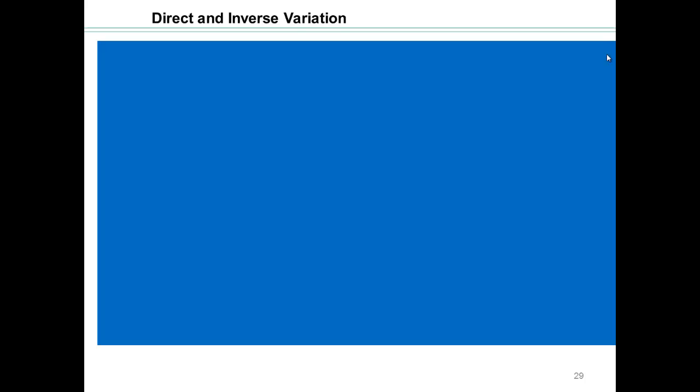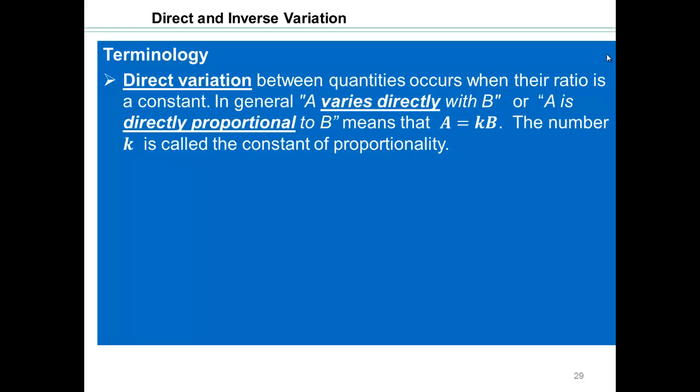All right, let's take a look at something called direct and inverse variation. A direct variation between quantities occurs when their ratio is a constant.